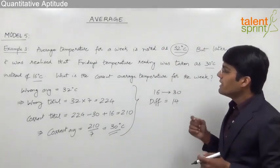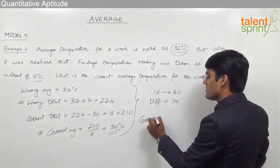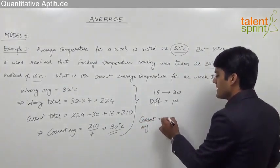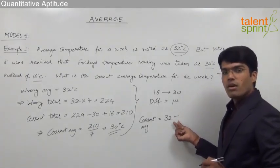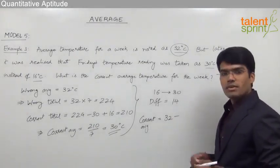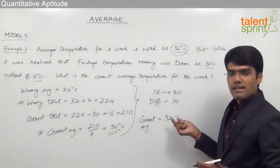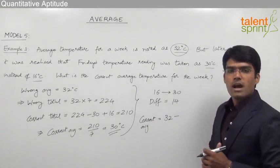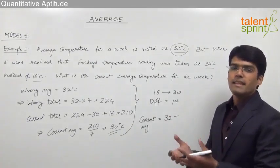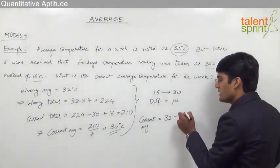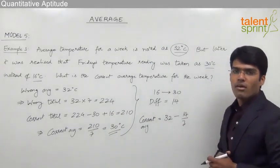This wrong average is higher than the correct average. To find the correct average, we need to decrease the overall temperature by 14 degrees. The correct average equals the wrong average, 32 degrees, minus something. Since the correct average should be less than the wrong average, we subtract — but this 14 degrees must be equally divided among all 7 days. So we subtract 14 divided by 7.